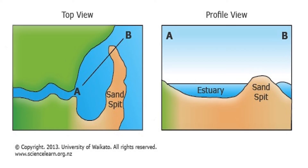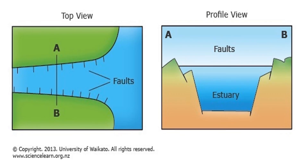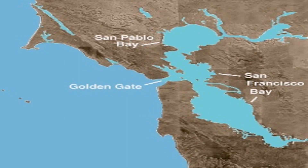Bar-built estuaries are formed when sandbars or barrier islands are built up by ocean waves and currents, usually protecting a lagoon or bay. They protect not only from extreme waves and winds, but also protect delicate brackish environments. Bar-built estuaries are very important, so scientists study them closely to ensure the brackish environment stays intact. Tectonic estuaries are formed when tectonic plates create depressions by running into each other or folding underneath each other. An example is the San Francisco Bay, which has had complex tectonic activity for thousands of years.